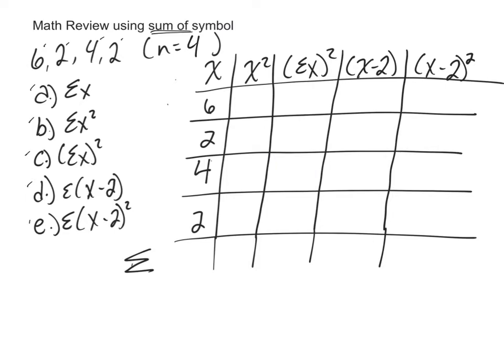I filled in this first column here with our raw scores. So we have 6, 2, 4, and 2. And at the very bottom, we're just going to have this be our sum.